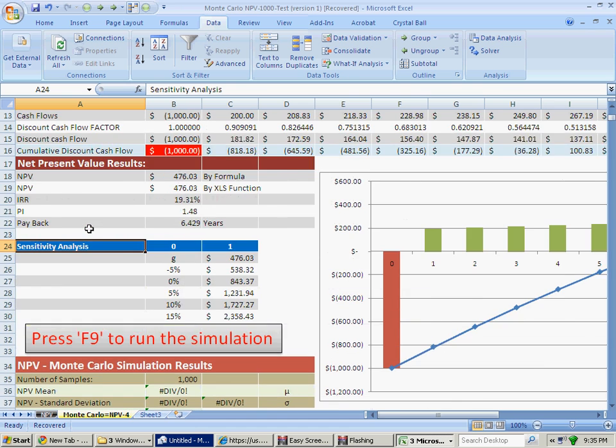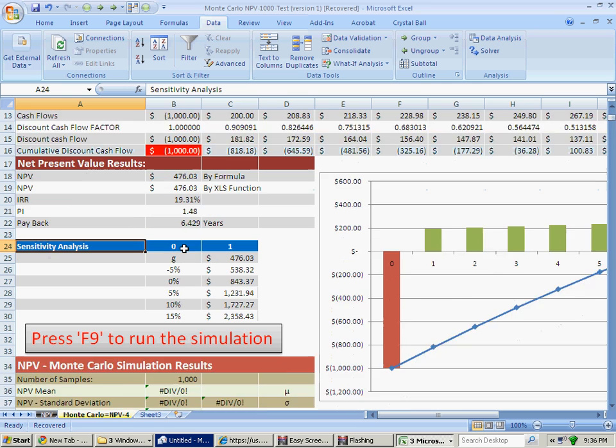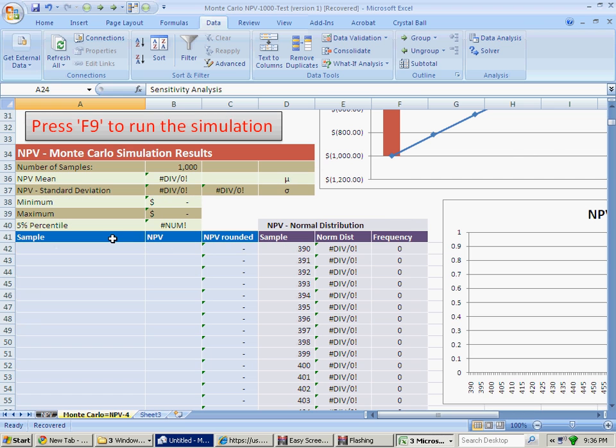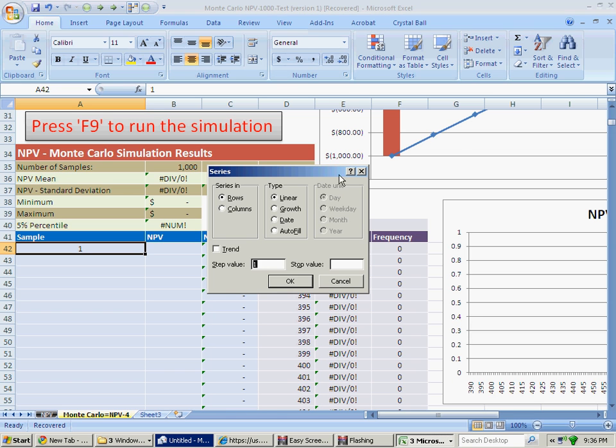And now we are going to run the Monte Carlo simulation a thousand times. For this particular example, let's build a table with a thousand samples. So we put here number one. We are going to build a table. Let's go to series columns, linear, from one to a thousand.